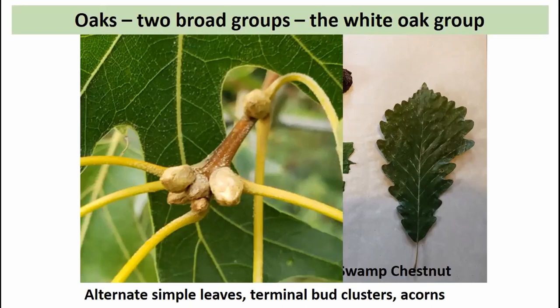A strong characteristic for practically all oaks is the terminal bud cluster — at the very end of the twig we find several buds clustered together, also with associated leaves.